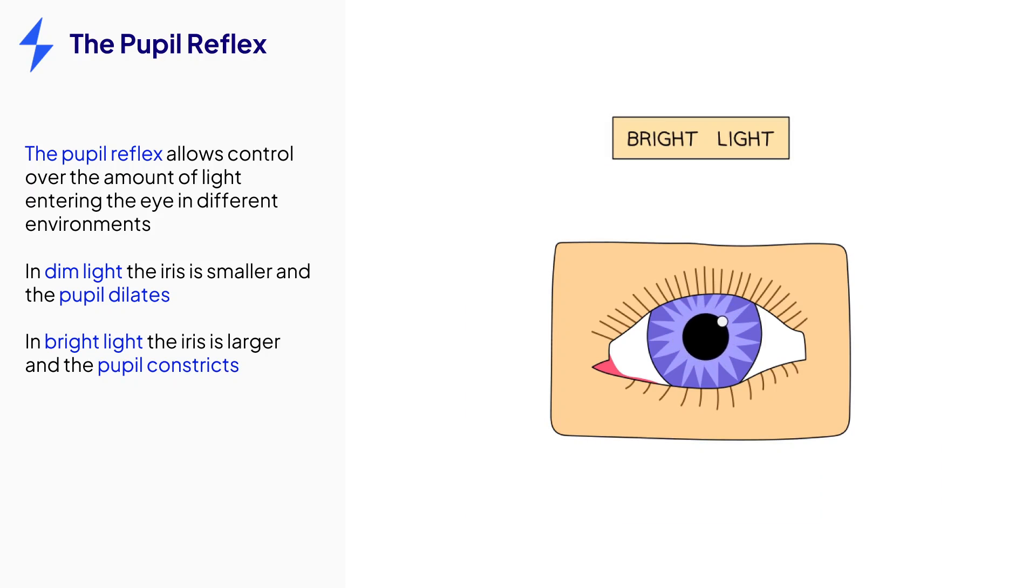In bright light conditions, letting too much light into the eye can cause damage to the back of the eye. Instead, the pupil constricts and gets smaller as the iris gets bigger, and less light enters the eye.